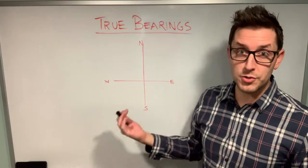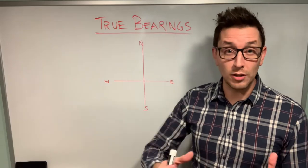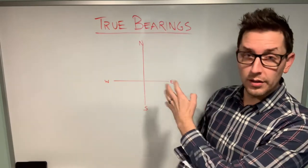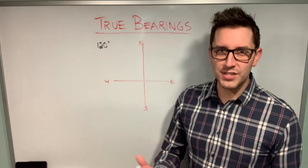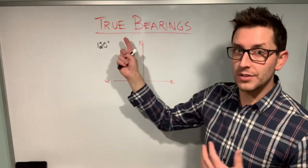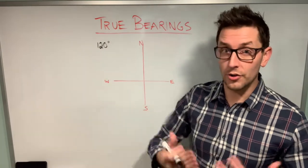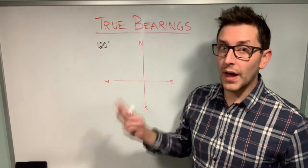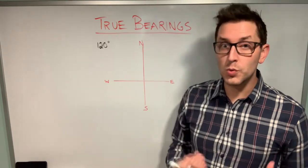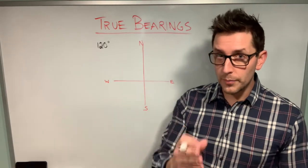I want to start by talking about true bearings — first, what a true bearing looks like numerically, and then how to draw one on a grid. True bearings look like an angle: they have a numerical component and a degree symbol. Without context you'd just read this as 120 degrees, but the key characteristic of a true bearing is that it describes a direction with respect to the northern axis.